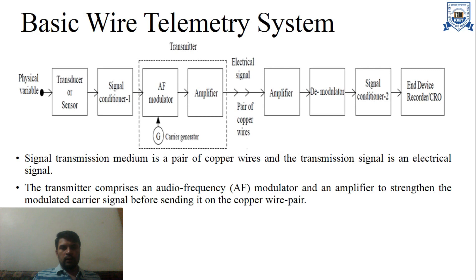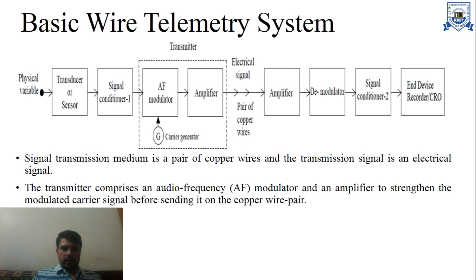Here is the basic wire telemetry system for a particular case, in which we have a physical variable, again transducer or sensor. Next we have signal conditioners. In the transmitter, we have audio frequency modulators, amplifiers, and a carrier generator on which we send our signals. Then the electrical signals travel through a pair of copper wires from one place to another. At the receiving end, we have amplifiers, demodulators, signal conditioners, and end device. The signal transmission medium is a pair of copper wires and the transmitted signal is an electrical signal.